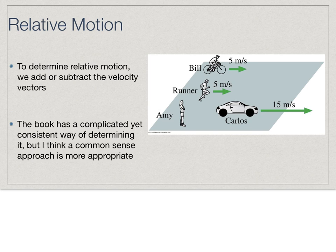To determine the relative motion, we add or subtract the velocity vectors as needed. If you want the pure mathematical way to approach this, read the book. What I'm going to discuss is more the intuitive way, because I think the mathematical part of adding and subtracting is a little bit difficult. I think the intuitive way is a little bit easier.